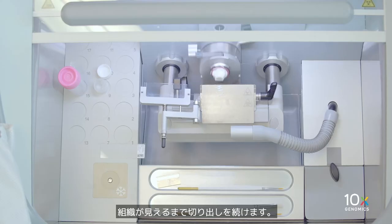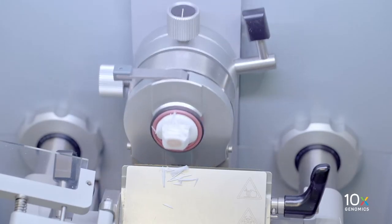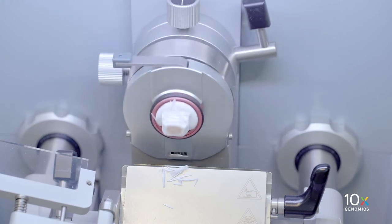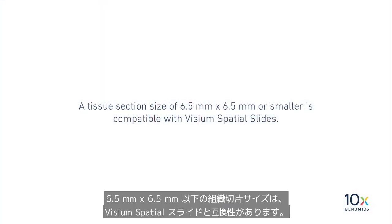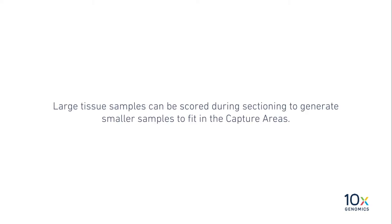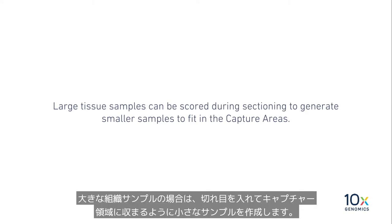A tissue section size of 6.5 millimeters by 6.5 millimeters or smaller is compatible with Visium Spatial slides. Large tissue samples can be scored during sectioning to generate smaller samples to fit into capture areas.